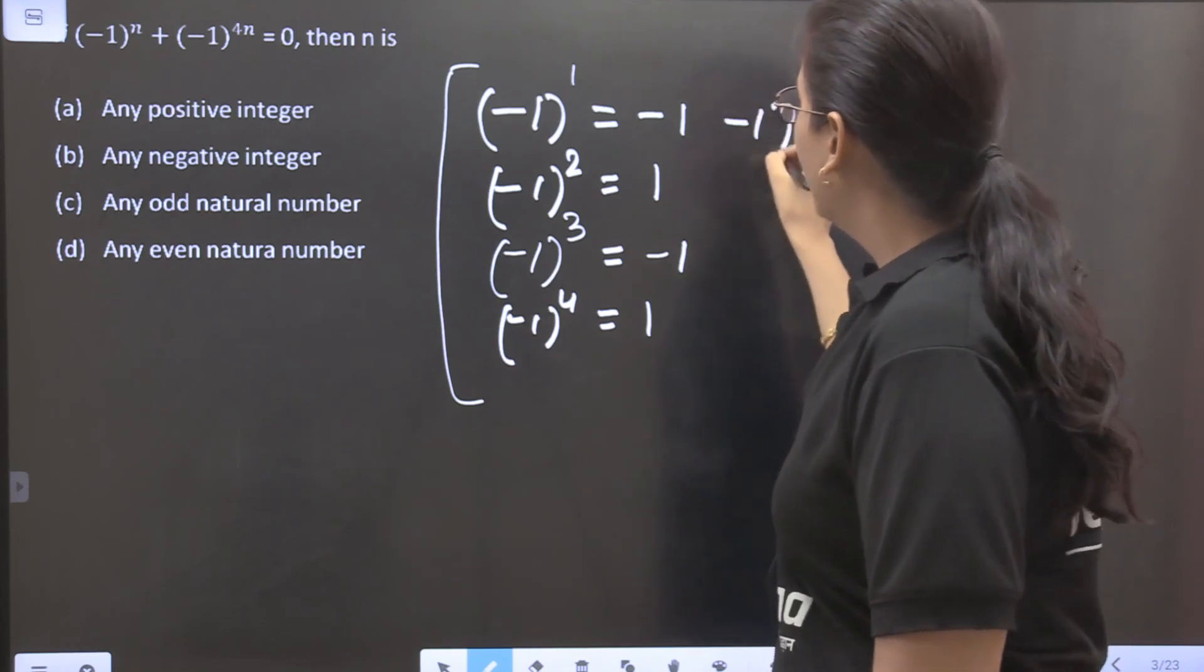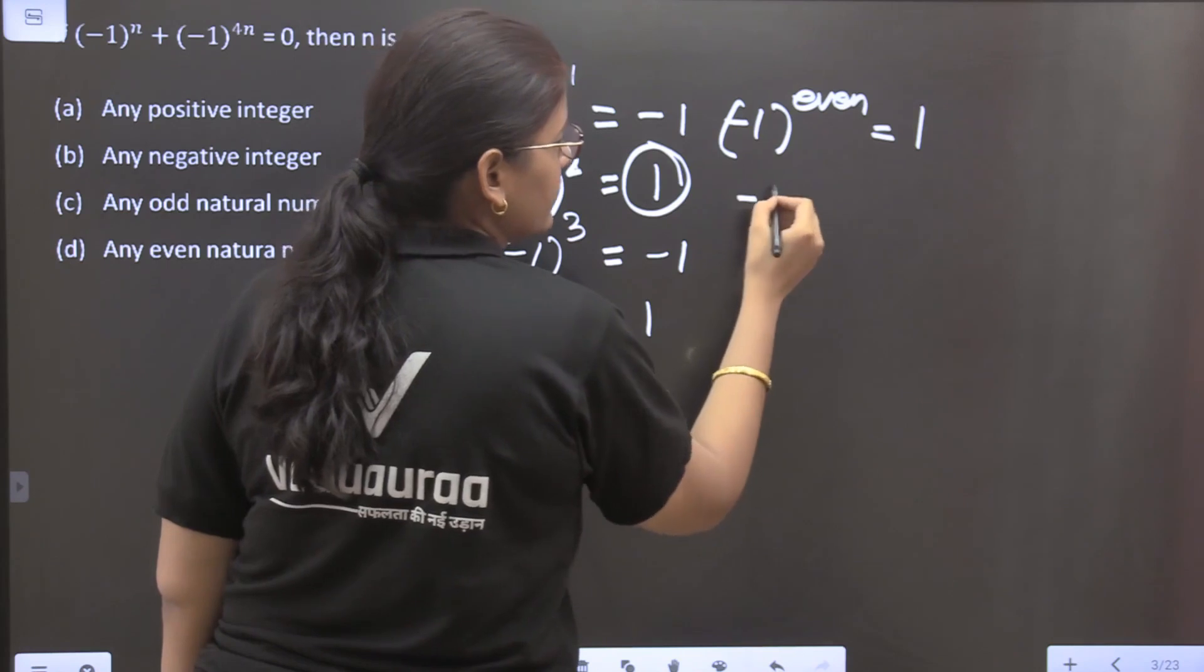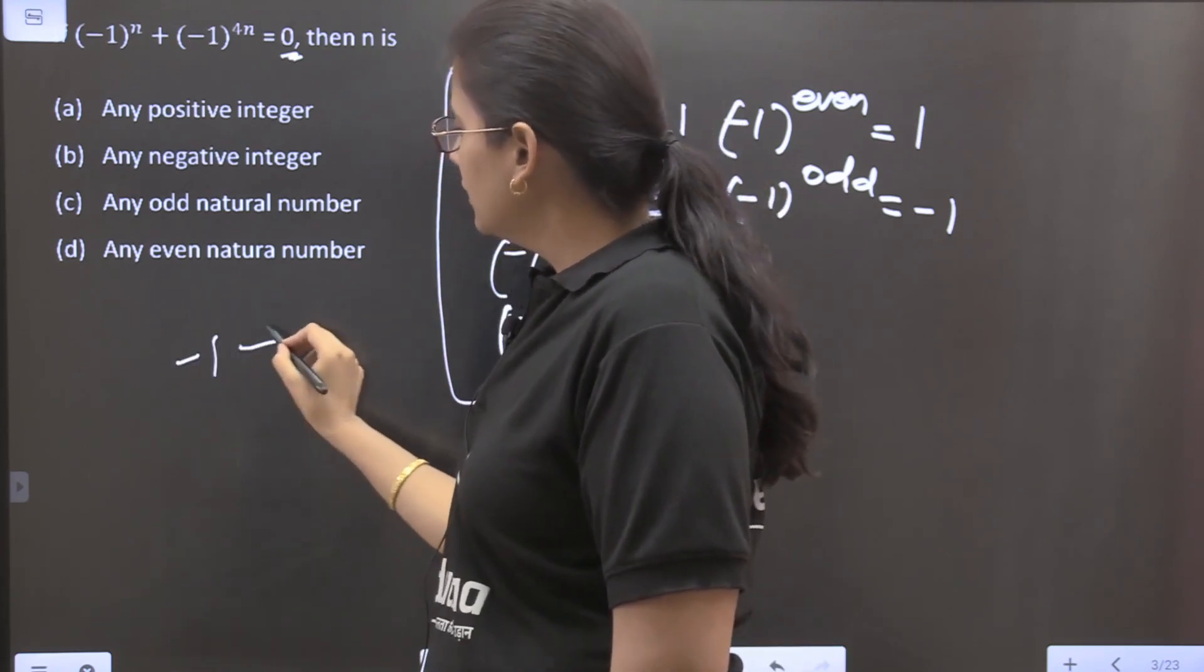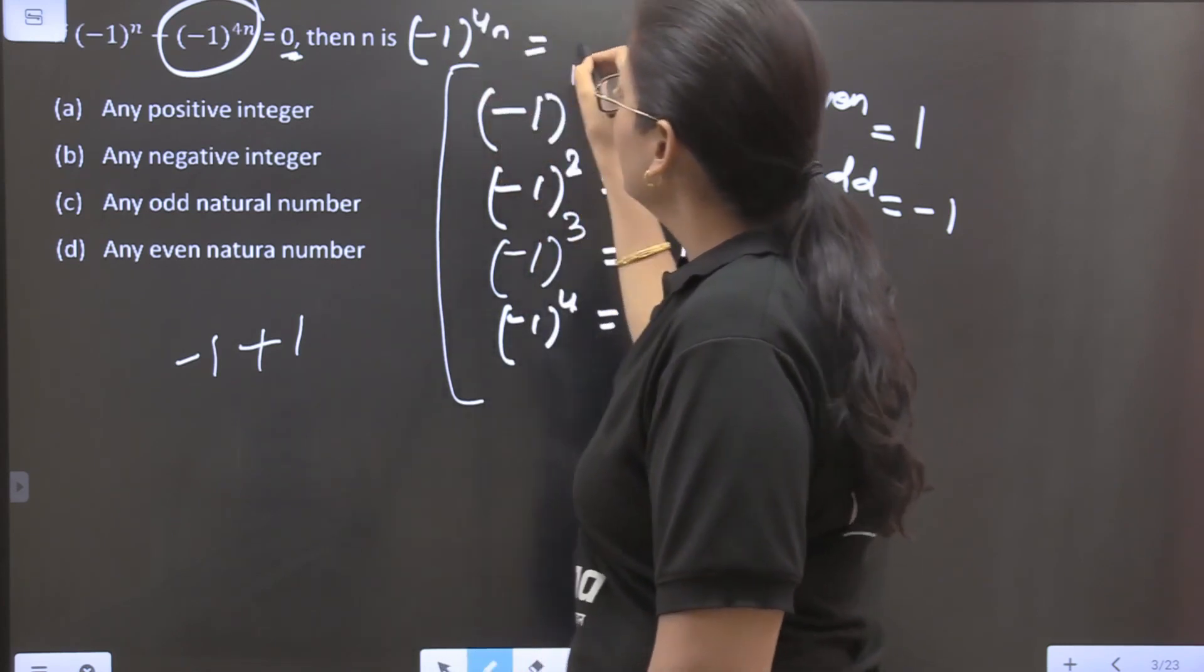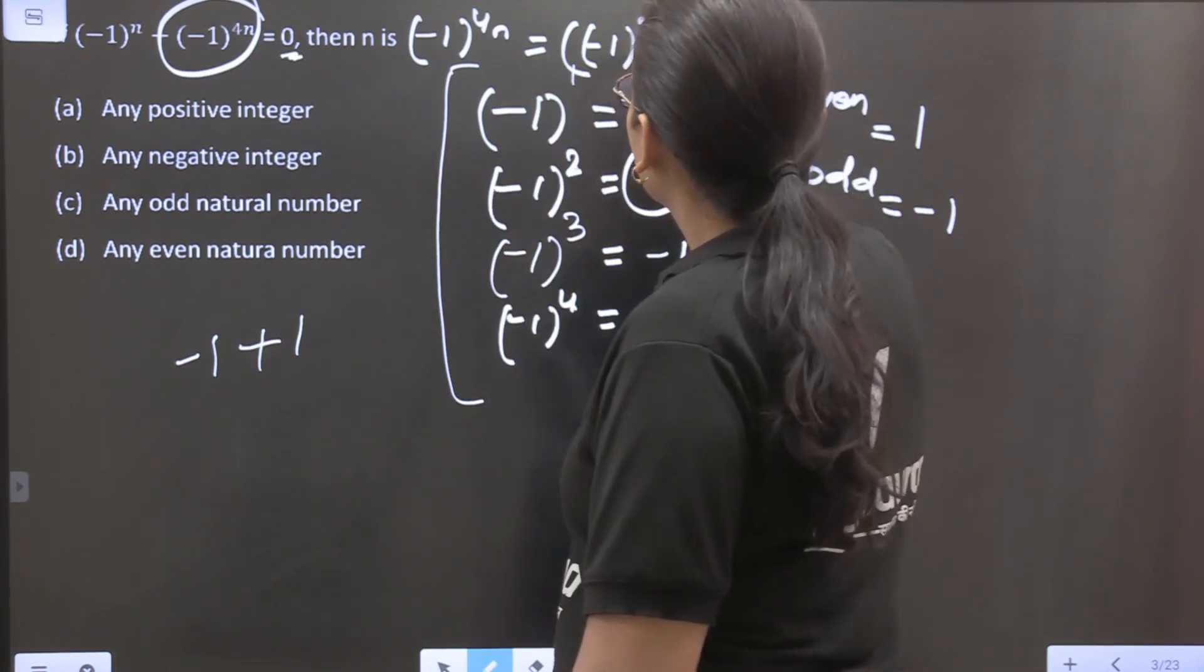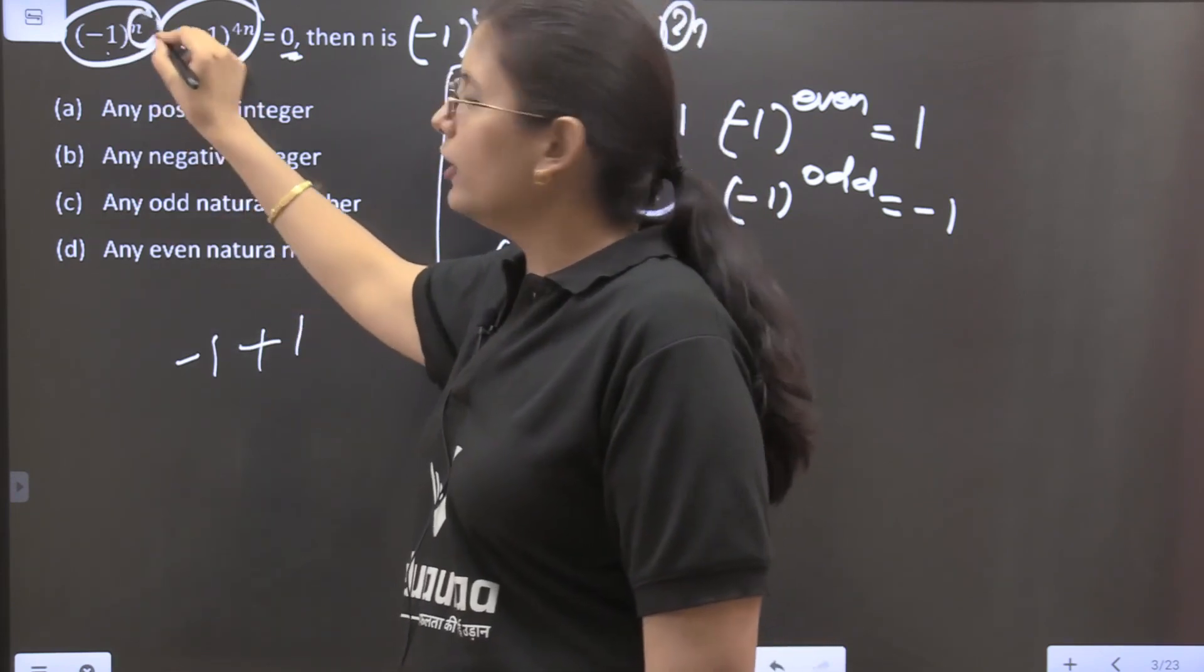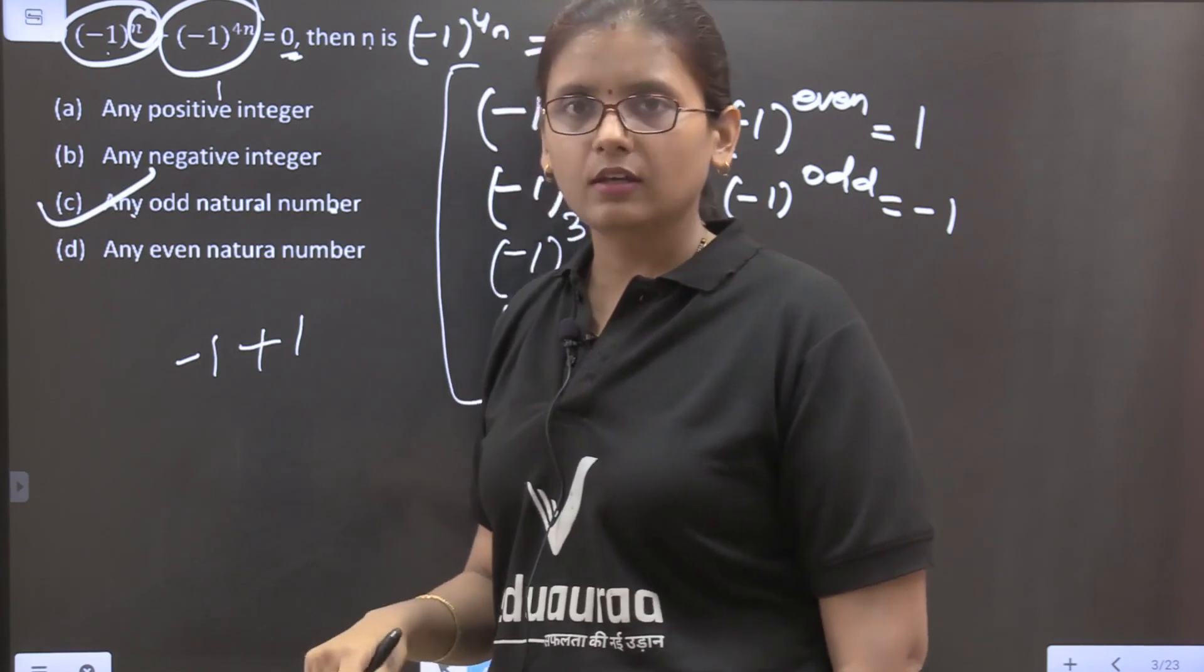So from this what we conclude is whenever minus 1 has an even power then it is 1, and whenever it has an odd power then it is minus 1. So here the question states that it is 0, that means our one bit will be minus 1 and the other will be plus 1. In this bit, this is minus 1 to the power 4n which equals minus 1 squared to the power 2n because 4 equals 2 into 2. So that means it is an even number, that means this will always be 1. So it is necessary that this should be minus 1 and for this to be minus 1, n should be odd.